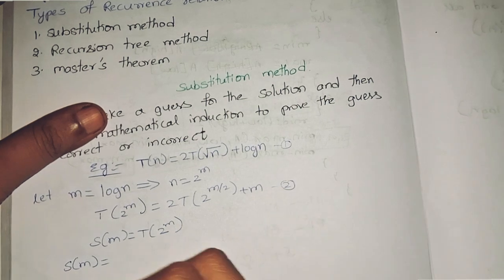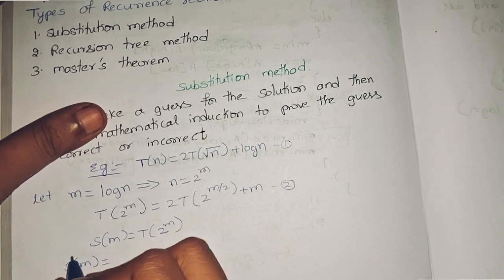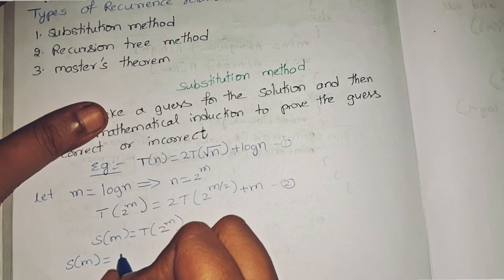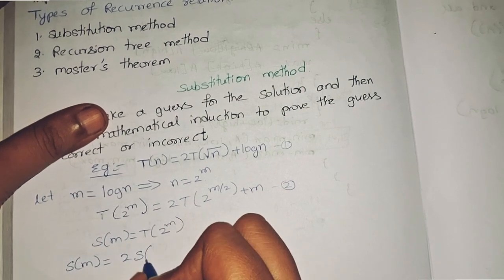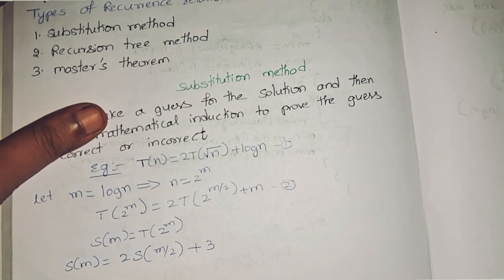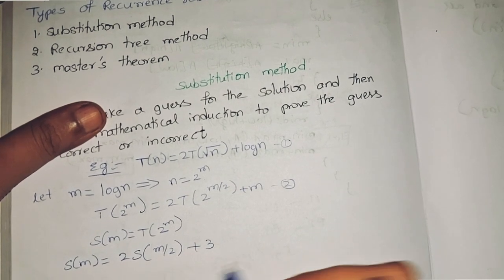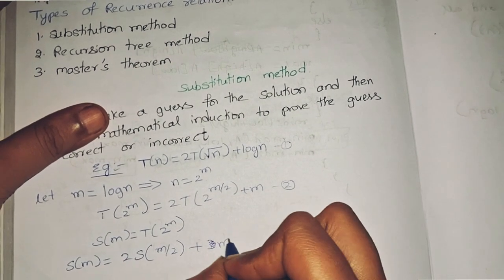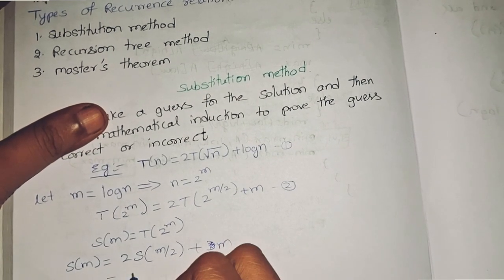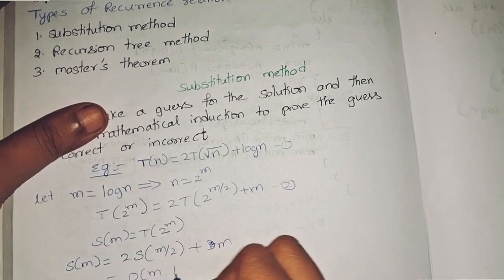This is equation 2. Substitute here, so s(m) = 2s(m/2) + m. This goes to Big O of m log m.